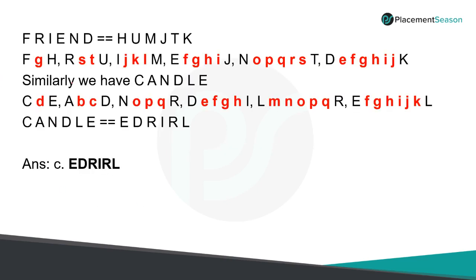Here we have FRIEND: F goes to H, R is replaced by U, I by M, E by J, N by T, and D by K. Now let's see the logic. Between F and H there is only one letter, that is G. Similarly, between R and U there are two letters. So here it is one, here it is two, the next is three, E to J is four, and N to T is five.